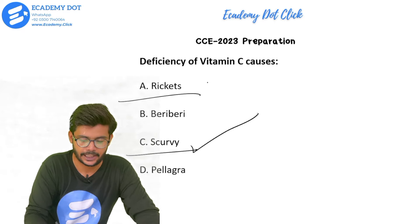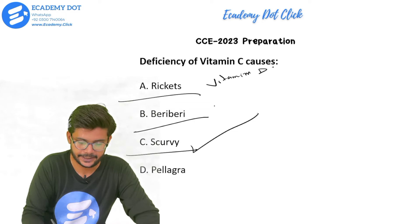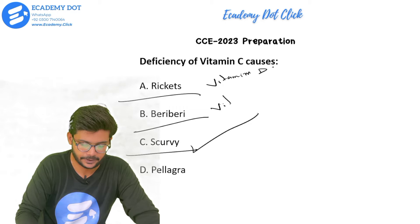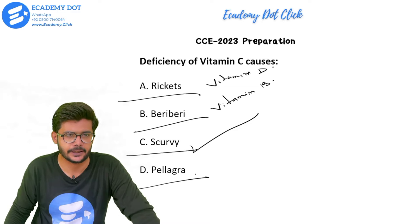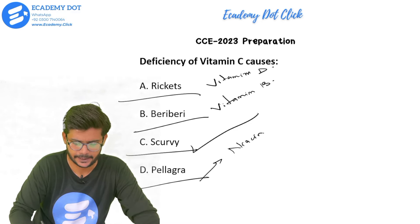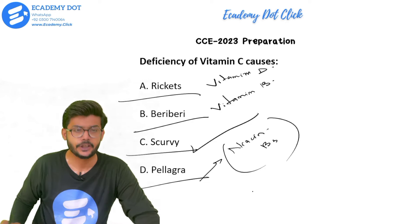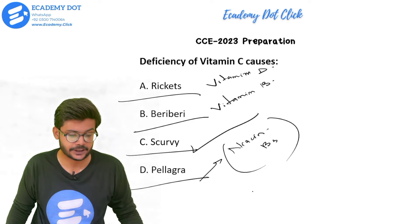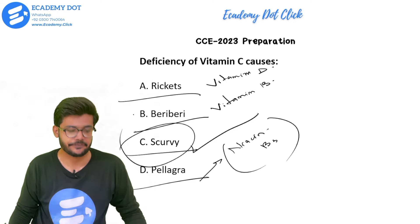Rickets is caused by deficiency of vitamin D. Beriberi is caused by deficiency of vitamin B. Pellagra is caused by deficiency of B complex — specifically niacin (B3). So the right answer for deficiency of vitamin C is scurvy.